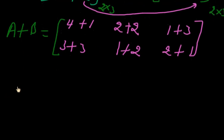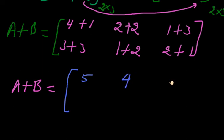Now A plus B is equal to: 4 plus 1 equals 5, 2 plus 2 equals 4, 1 plus 3 equals 4, 3 plus 3 equals 6, 1 plus 2 equals 3, 2 plus 1 equals 3. That is our answer.